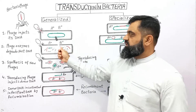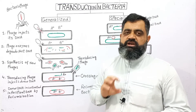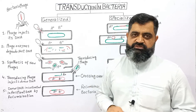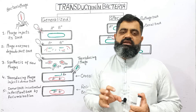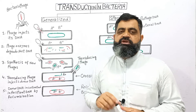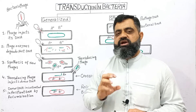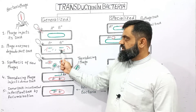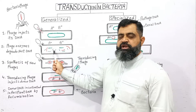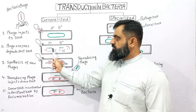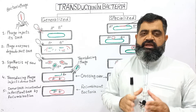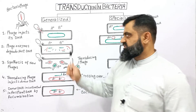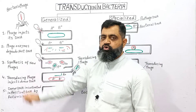In the second step, with the help of viral enzymes, they break down the bacterial DNA into different pieces so that it can be utilized. The host machinery is then used to synthesize viral protein and viral DNA to produce more and more viruses. As you can see in this diagram, the bacterial DNA has been broken into pieces, and at the same time viral DNA is going into action, synthesizing new viral protein and DNA. The second step is: phage enzymes degrade host DNA.